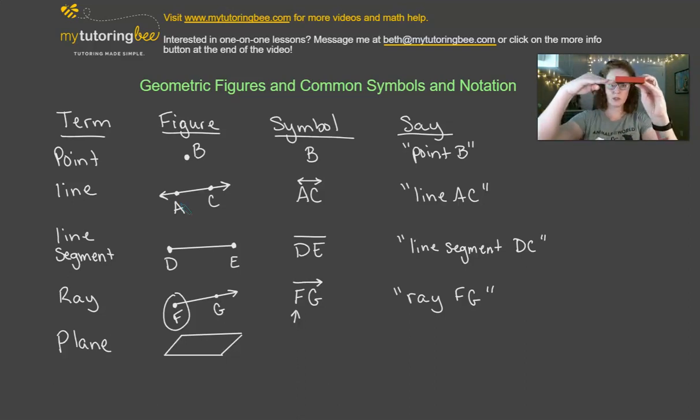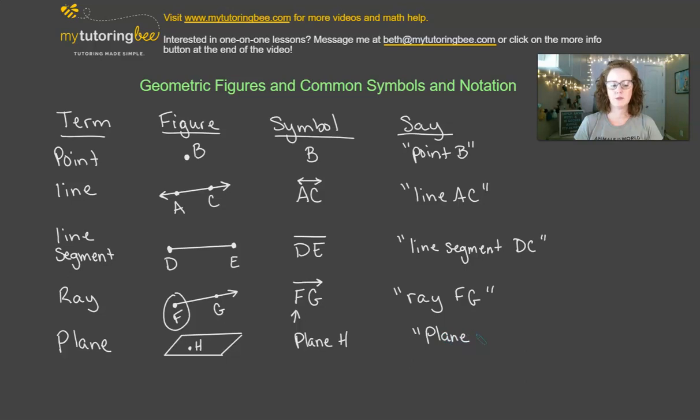For example, I have this little coaster here that's sort of a very flat rectangular prism. If I were to slice right through this through the middle, that would be a plane in the middle of this solid figure. So that's why it is typically drawn with this parallelogram, and there might be some point that's labeled just within the plane somewhere. And so the plane doesn't necessarily have a symbol. We would just say plane H, and so again plane H is how that would be said out loud.